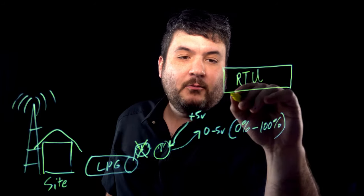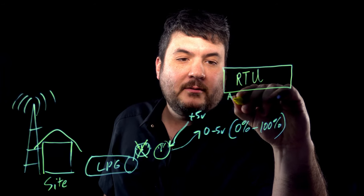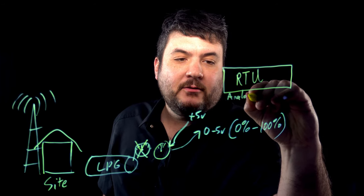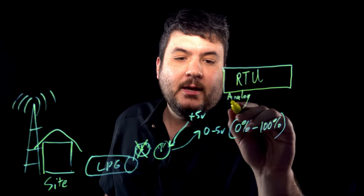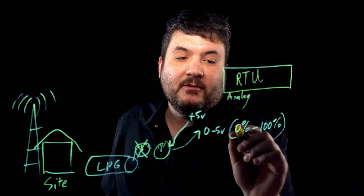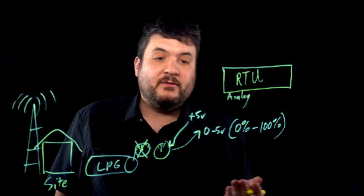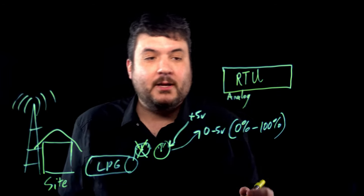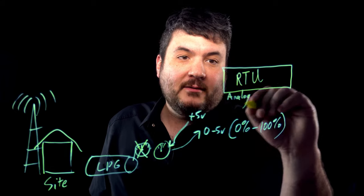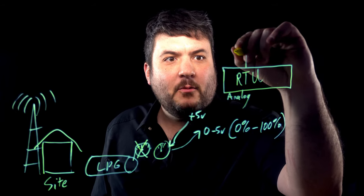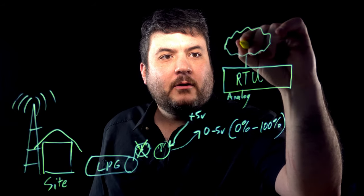So, what's going to happen is this is what we call an analog input. You're going to supply power to it and then it's going to feed you back. You're going to measure that voltage. And the RTU should be smart enough to say, okay, 3 volts. That must be 60% or whatever the reading is.